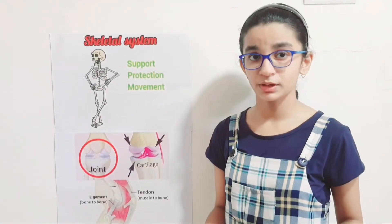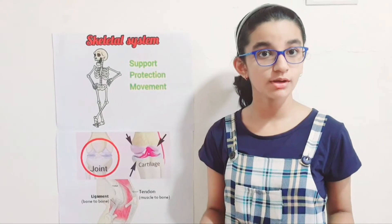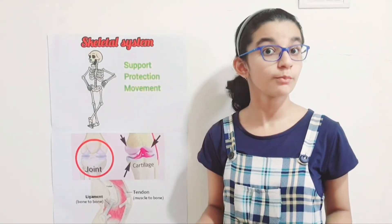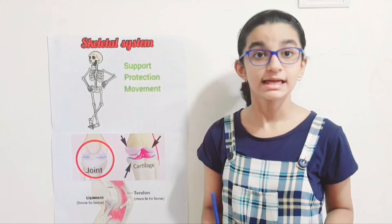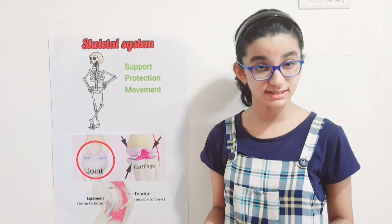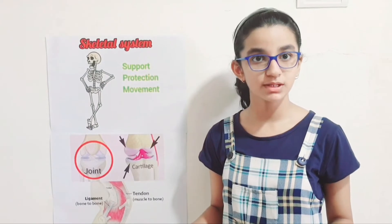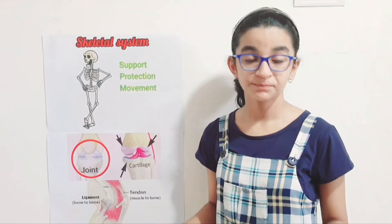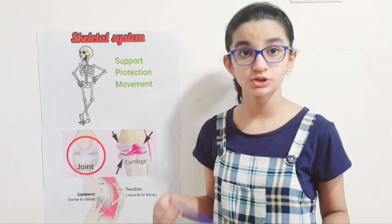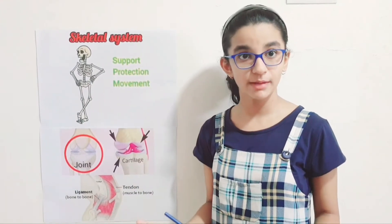Renewal of blood: the bones have cavities in them that contain spongy material called marrow, or bone marrow. This bone marrow produces new blood cells — red blood cells, also known as RBC, and white blood cells, known as WBC. The bones also store minerals like calcium and vitamin D.